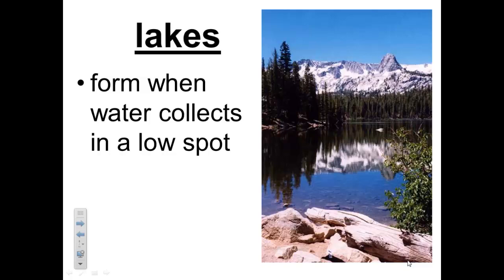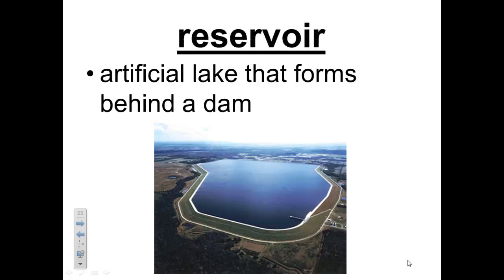Sometimes water flows into a place that is surrounded by higher land or blocked by a dam, and lakes form when the water collects in the low spot. A reservoir is an artificial lake that forms behind a dam. Water that forms a lake is not really trapped — water can leave a lake by flowing into a river, by seeping into the ground, or by evaporating into the air.